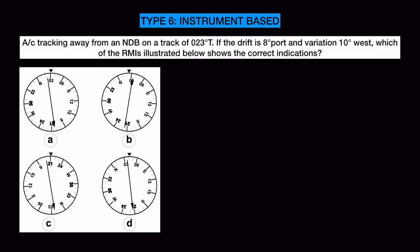The last type of questions are instrument-based — you get diagrams of RBIs or RMIs and must choose which correctly represents the given situation. In an RMI, the heading of the aircraft is shown at the top, the tail of the needle shows the radial or QDR, and the head of the needle shows the QDM.